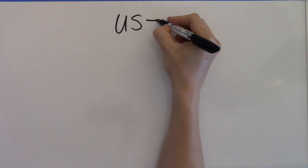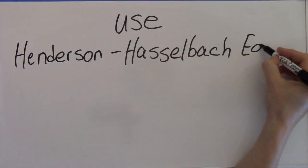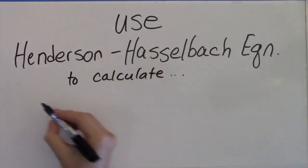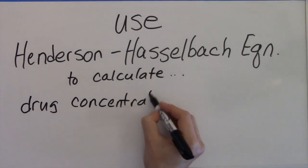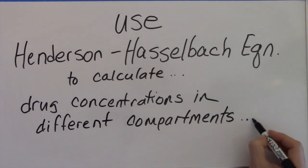I'm going to show you a step-by-step method for using the Henderson-Hasselbalch equation to calculate concentrations of a weak acid or weak base drug that is subject to ion trapping in different compartments of the body.